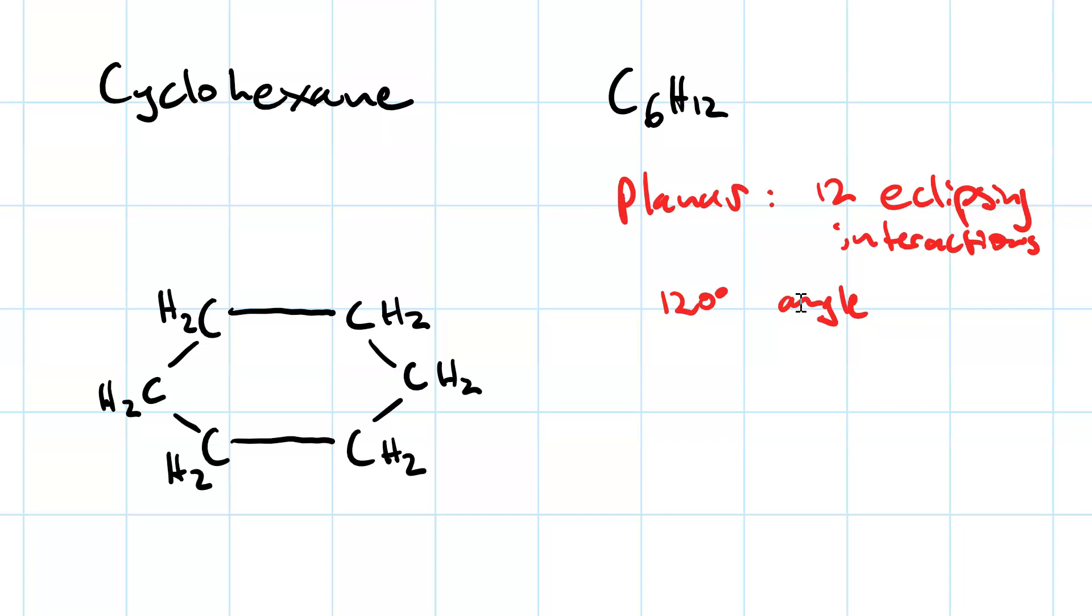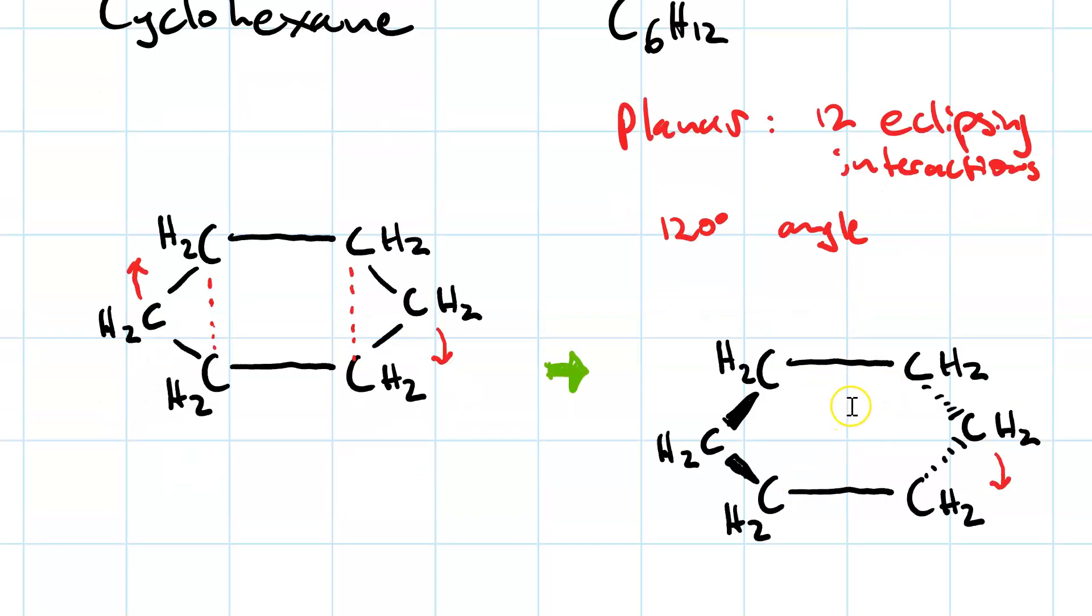Here's how it works. Imagine you do an envelope-type fold here, folding that carbon down out of the plane just a little bit, then do another fold here, folding this carbon up out of the plane. Now, if we're looking at the chair conformation such that these four carbons are in the plane, this one's above the plane, and this one's below the plane, this is what it looks like.